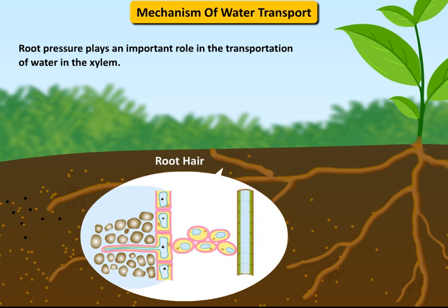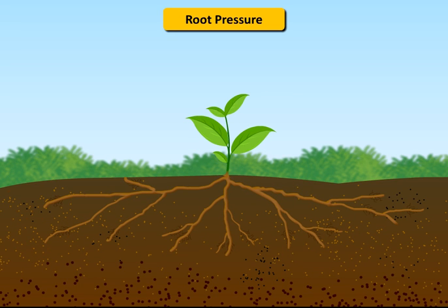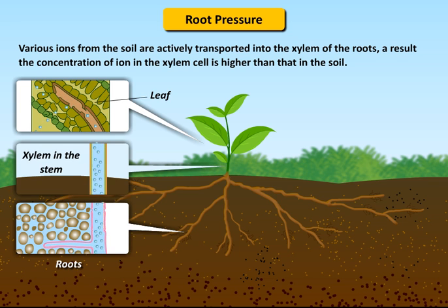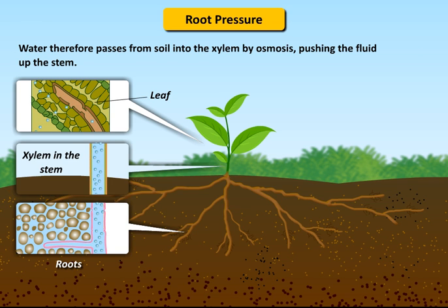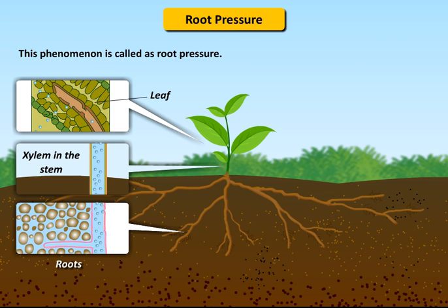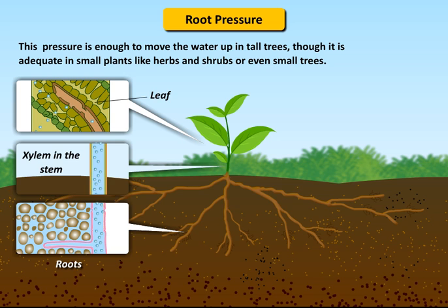Root pressure plays an important role in the transportation of water in the xylem. Various ions from the soil are actively transported into the xylem of the roots. As a result, the concentration of ions in the xylem cell is higher than in the soil. Water therefore passes from soil into the xylem by osmosis, pushing the fluid up the stem. This phenomenon is called root pressure. This pressure is enough to move the water up in tall trees, though it is adequate in small plants like herbs and shrubs or even small trees.